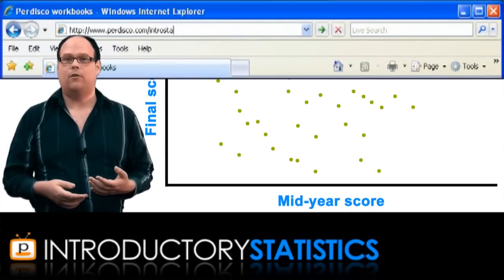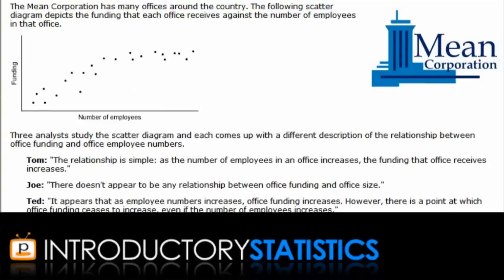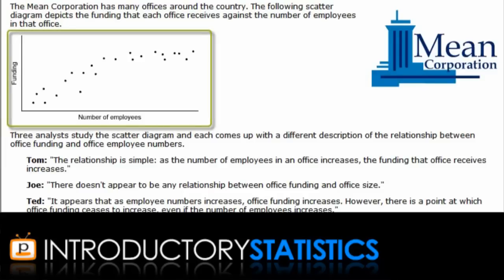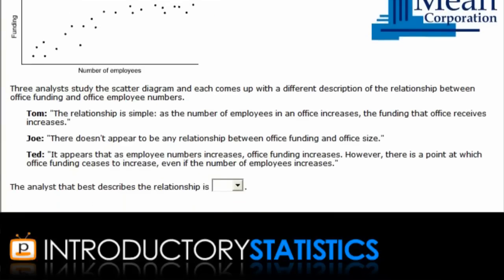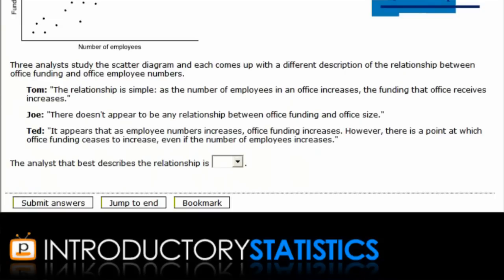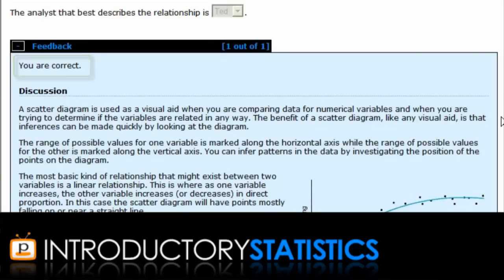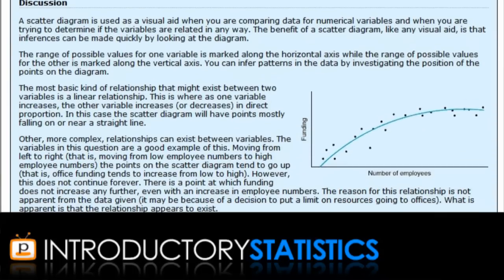In this question, some data have been collected for the different offices of the mean corporation. In particular, the number of employees at each office and the amount of funding that office receives are recorded for every office in the mean corporation. This scatter plot shows the data for funding versus number of employees. And three analysts have studied the plot and offered suggestions for the relationship that exists. You're being asked which description is best. TED offers the best description, so we'll submit that. And now we see we get personalized feedback and an explanation for the question.